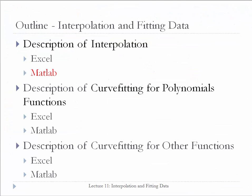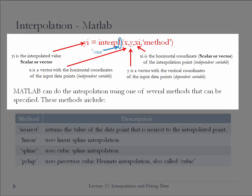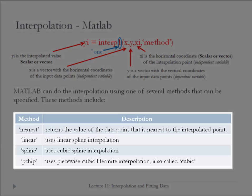Let's now do interpolation using MATLAB. MATLAB can do interpolation using the command interp1. The setup is: x and y are the original vectors with the same size, and xi is the scalar or vector value that you would like to approximate. The method is one of the following four choices: nearest, linear, pchip, or spline.